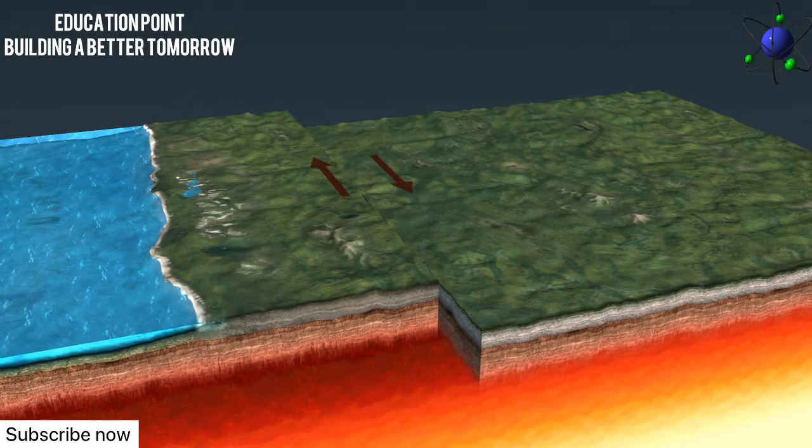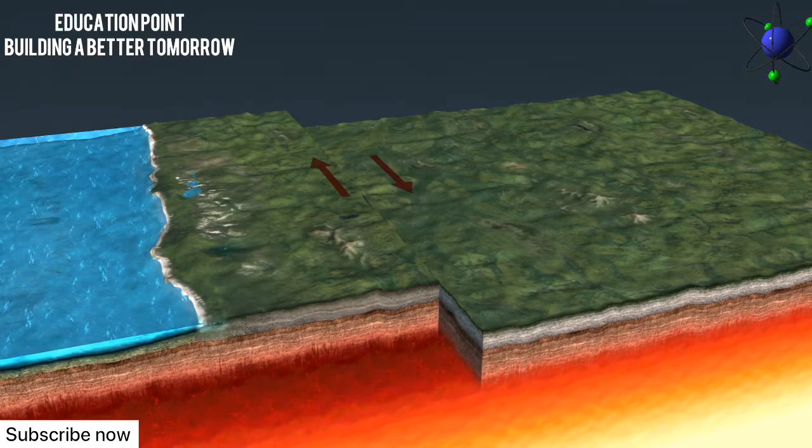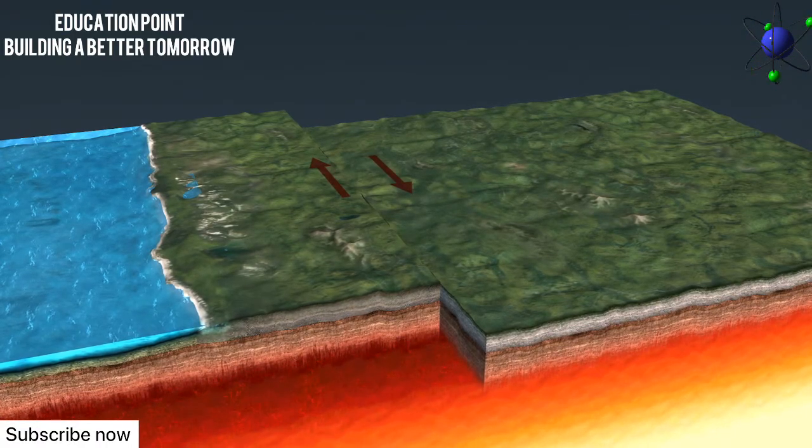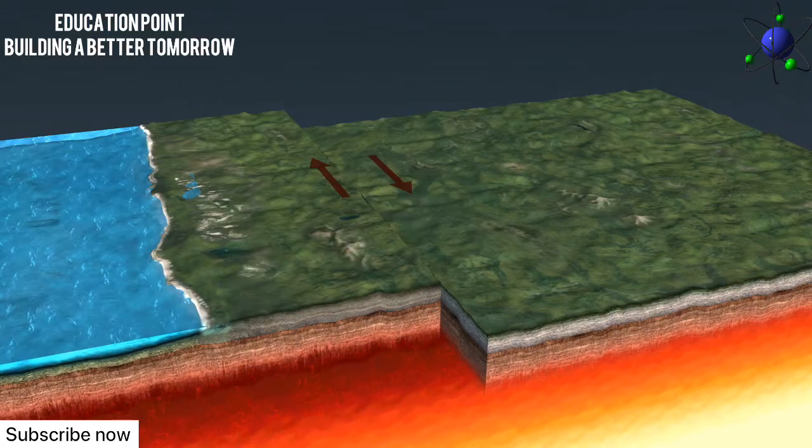Examples of mountain ranges formed as a result of subduction are the Andes and the Himalayas. On rare occasion, two adjacent plates slip along a fault, resulting in an earthquake. This is the case with the San Andreas Fault in California.